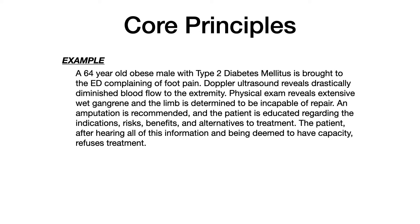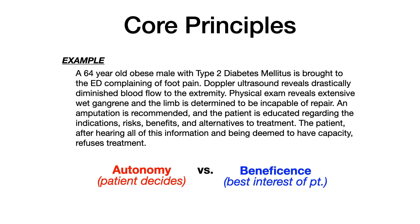So what's the problem in this example? The problem is that autonomy is at odds with beneficence. The patient is refusing treatment — that's their autonomy; they have the right to determine their own healthcare needs and what happens to their body. This is at odds with what the physician recommends, which is what's in the best interest of the patient. What the patient wants, their autonomy, is at odds with what the physician recommends, their beneficence, because that would be in the best interest of the patient.